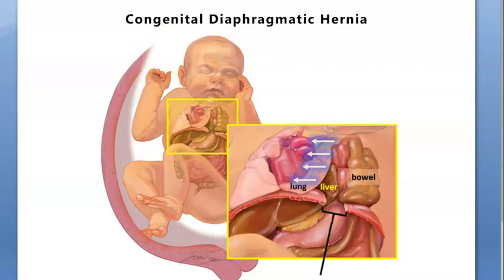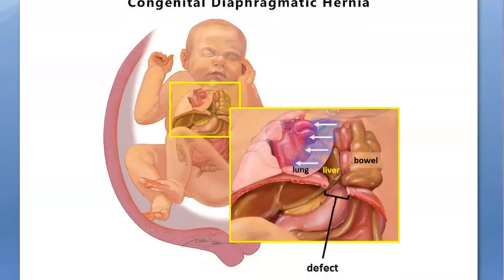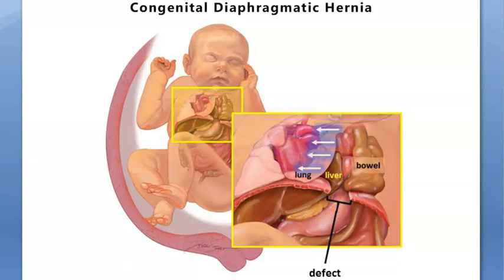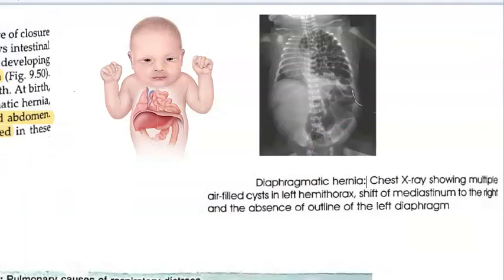In this video, let us look at congenital diaphragmatic hernia. There is a defect in the diaphragm which is allowing the bowel and liver to enter the thorax, compressing the lung. As you can see in this image, there are bowel loops visible in the thorax of this baby, because of the defect in the diaphragm allowing the bowel to enter.